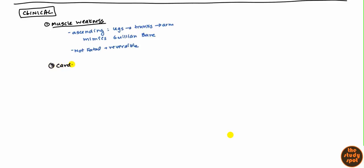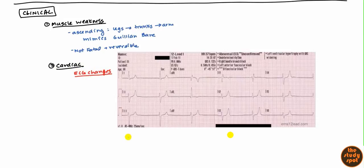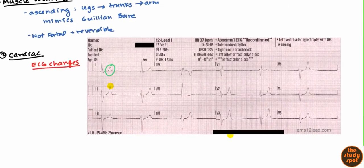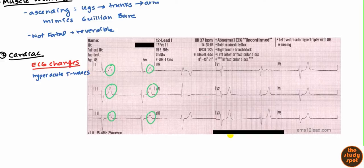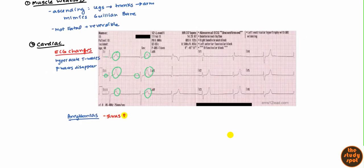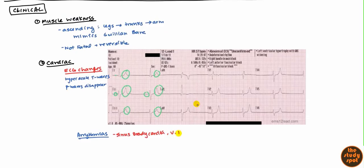What is very important to discuss is cardiac changes. The first thing you'll notice is ECG changes. Here is an ECG of a patient with hyperkalemia — you'll notice these peaked waves called peaked T-waves, also called tented T-waves. Another sign is that P-waves disappear. On top of that, you can get arrhythmias such as sinus bradycardia — this patient's heart rate was actually 37. They can also get something more serious like ventricular tachycardia, ventricular fibrillation, or eventually asystole. Very serious hyperkalemia can stop the heart, so it's a serious condition that needs to be treated right away.